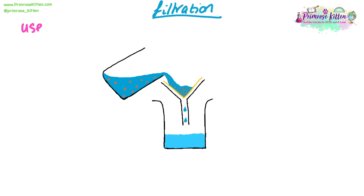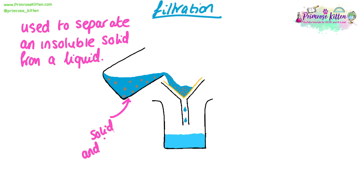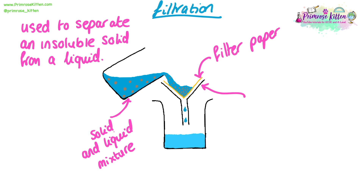The first method of separation is filtration, which is used to separate an insoluble solid from a liquid — any solid that will not dissolve, for example sand from water. In the beaker we have the solid and liquid mixture. The filter paper allows the liquid to pass through but catches all of the insoluble solid to prevent it moving through the funnel. The filter funnel allows us to pour the mixture in without spilling and acts as a housing for the filter paper.